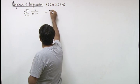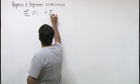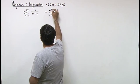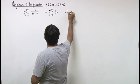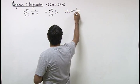We can write it as sigma r equals 2 to infinity tr, where tr is 1 upon r square minus 1.